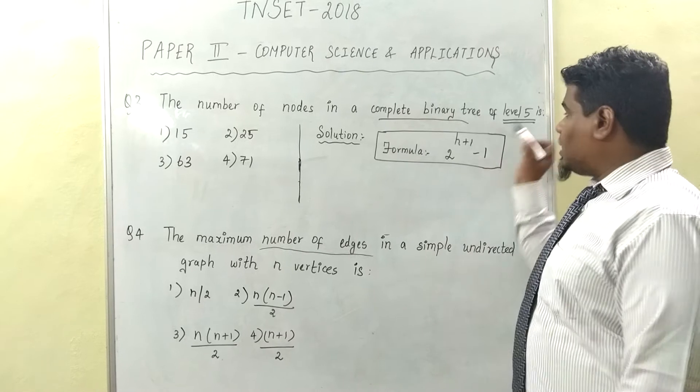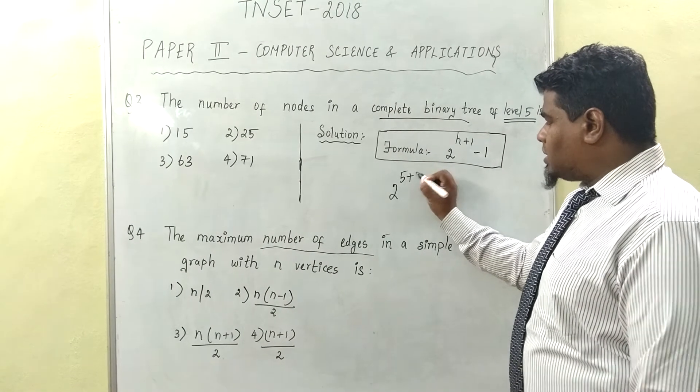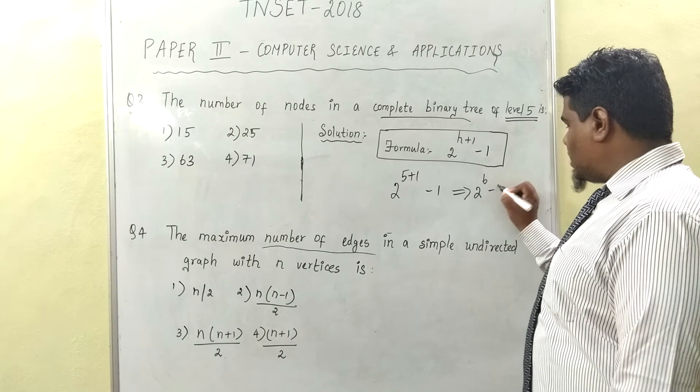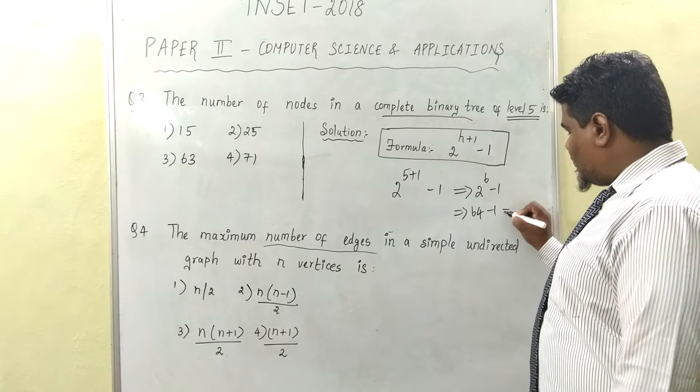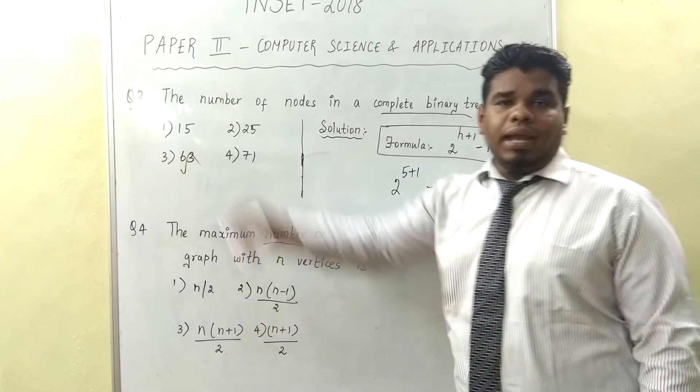So 2 power 5 plus 1 minus 1. That is 2 power 6 minus 1. 2 power 6 is 64 minus 1 which is nothing but 63. Option number 3 is the right answer.